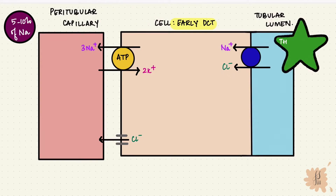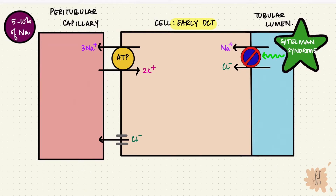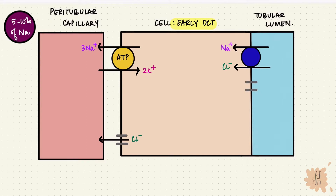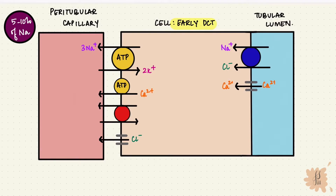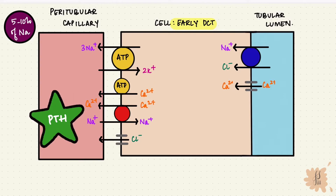This is the site of action of thiazide diuretics, and they reduce sodium chloride reabsorption. A genetic defect of the sodium chloride channel is called Gitelman syndrome, which is autosomal recessive. Calcium diffuses down the concentration gradient and then gets pumped out by calcium ATPase and the sodium-calcium countertransport into the interstitium, similar to the thick ascending limb of the loop of Henle. The parathyroid hormone increases the sodium-calcium exchange, so there is more calcium reabsorption.